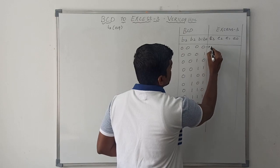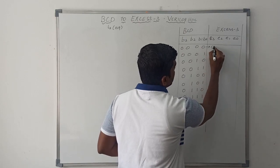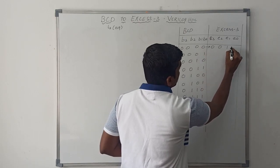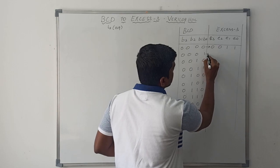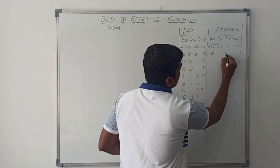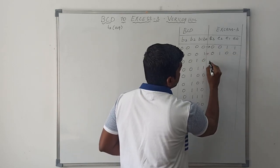0 equals XS3 value 3, which is 0011. 1 equals XS3 value 4, which is 0100.